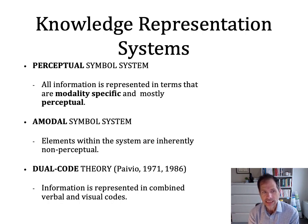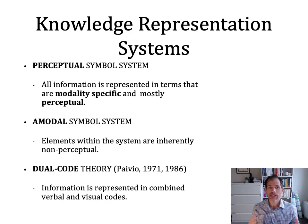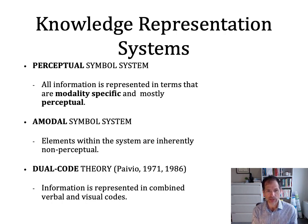So knowledge representation systems — I'm going to talk about two of them in greater detail. The other we'll just talk about briefly. The first of these are the perceptual symbol systems or the embodied cognition ideas. This theory suggests that all representation is represented in terms that are modality-specific and perceptual.